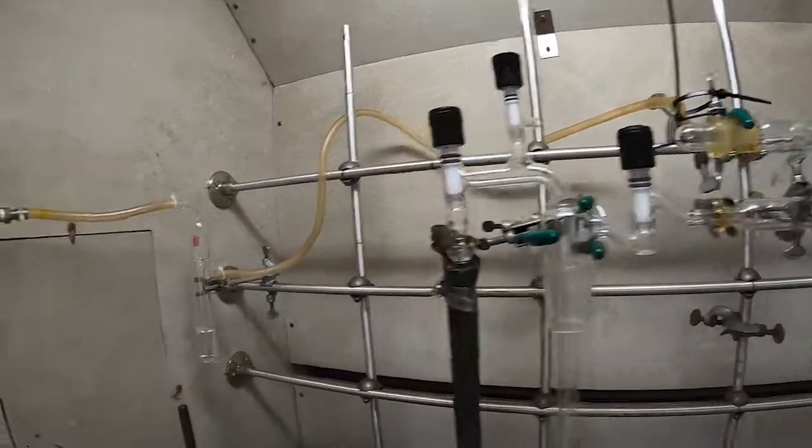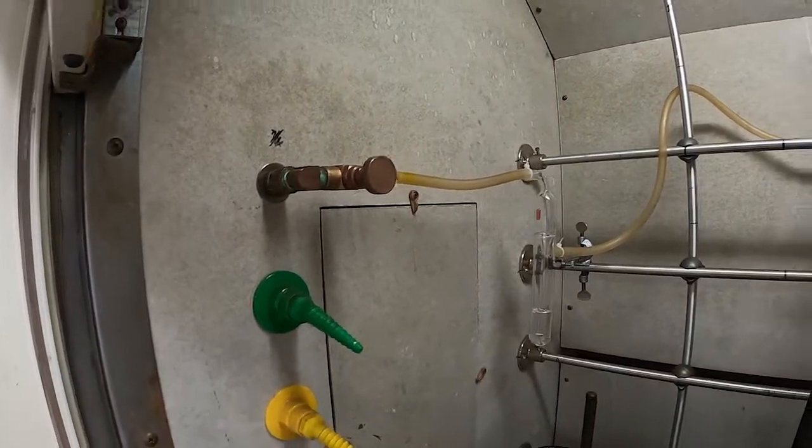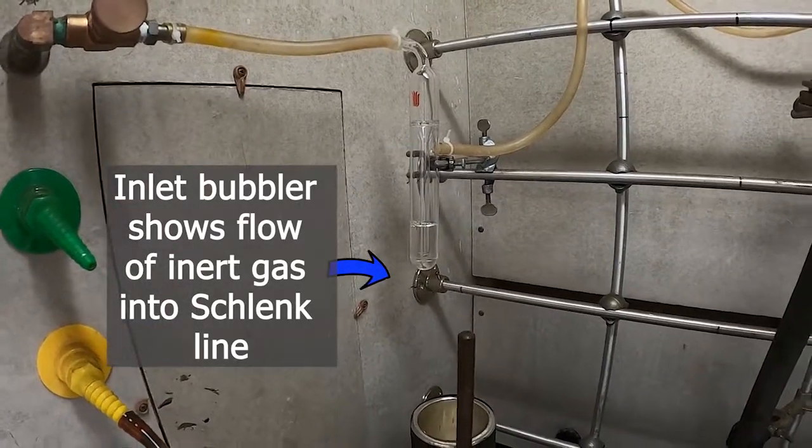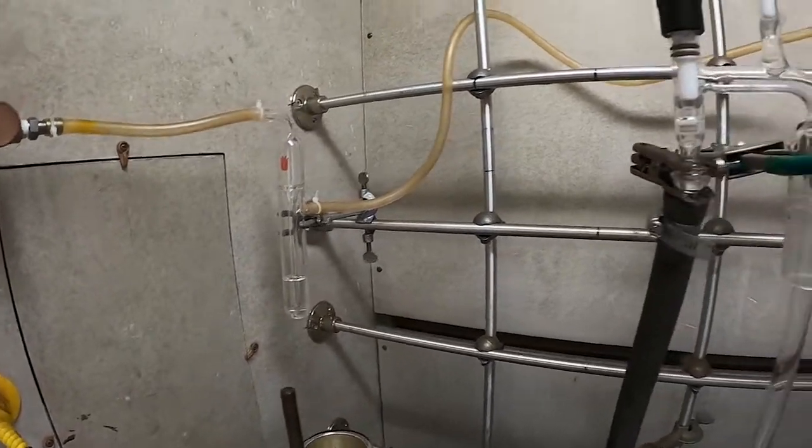The inert gas comes in usually through a tank or a dewar of some kind, nitrogen. And this bubbler here is used to indicate the flow and also prevent backflow of the gas through the system.